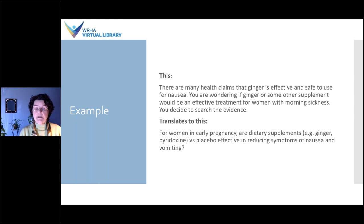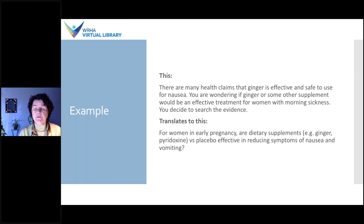To give you an idea of what that looks like: a complex question can be boiled down to something like, 'For women in early pregnancy, are dietary supplements versus placebo effective in reducing symptoms of nausea and vomiting?' PICO questions are referred to as foreground questions — they're patient-centered and problematic questions that involve interpretation and usually consider risk versus benefit for a patient or group of like patients, as opposed to background questions that can be easily answered by a review article or textbook.